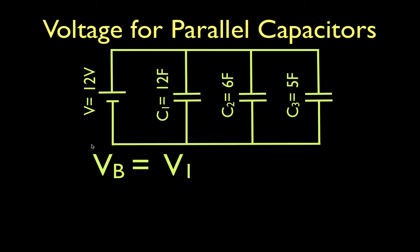The same thing goes for C2. It's connected right back to the battery, therefore the potential difference across the plates of capacitor number two is equal to the voltage of the battery, which is equal to the voltage across capacitor number one. And of course the same thing goes for C3.